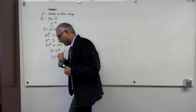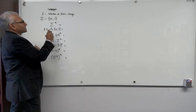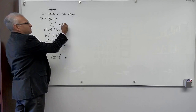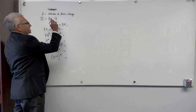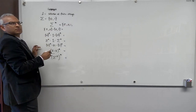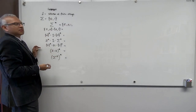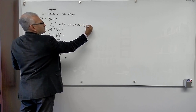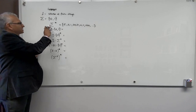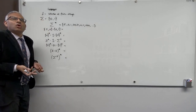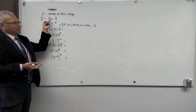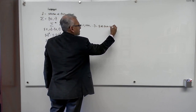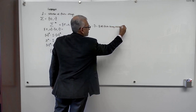Now let's solve these problems. Sigma star: this is the collection of strings formed by any number of concatenations of characters from {0,1}. You can start with the empty string, then take each character — zero, one — then concatenate two characters to get 00, 01, 10, 11, and so on for three characters. You will convince yourself that sigma star is basically all finite binary strings.